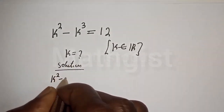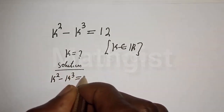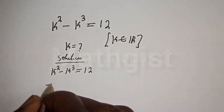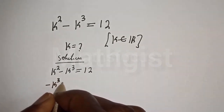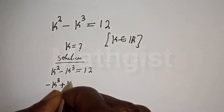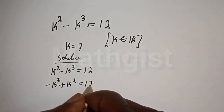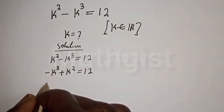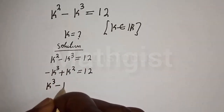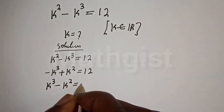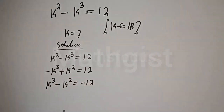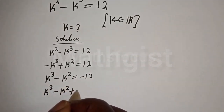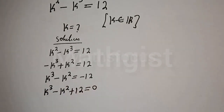k squared minus k raised to power 3 is equal to 12. We can rearrange this: minus k raised to power 3 plus k squared is equal to 12. Multiplying all through by minus 1 gives k raised to power 3 minus k squared is equal to minus 12. Then k raised to power 3 minus k squared plus 12 is equal to 0.